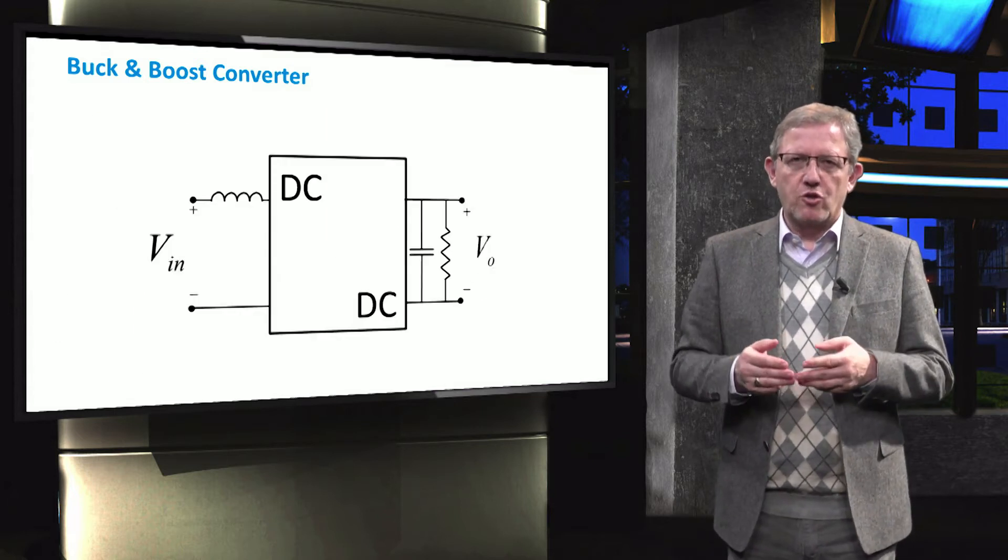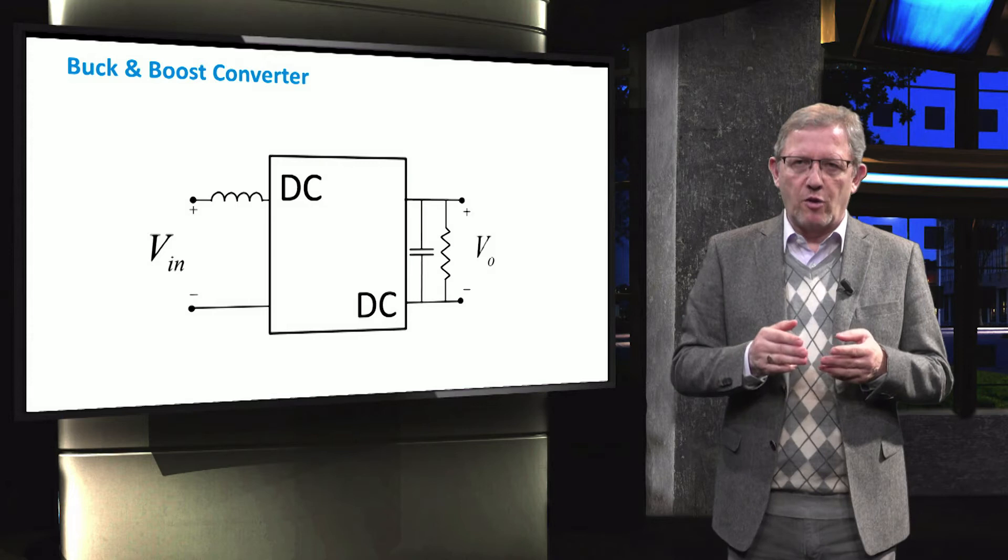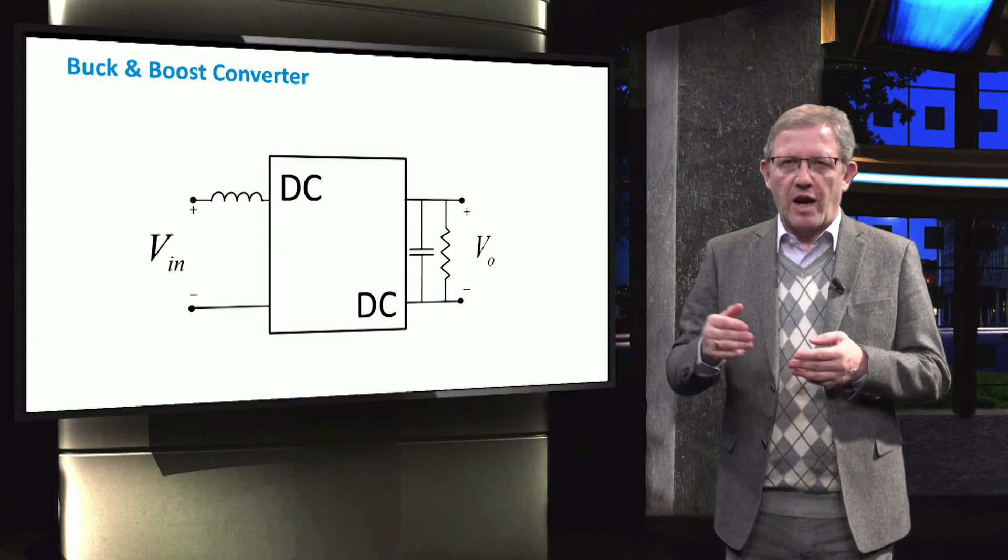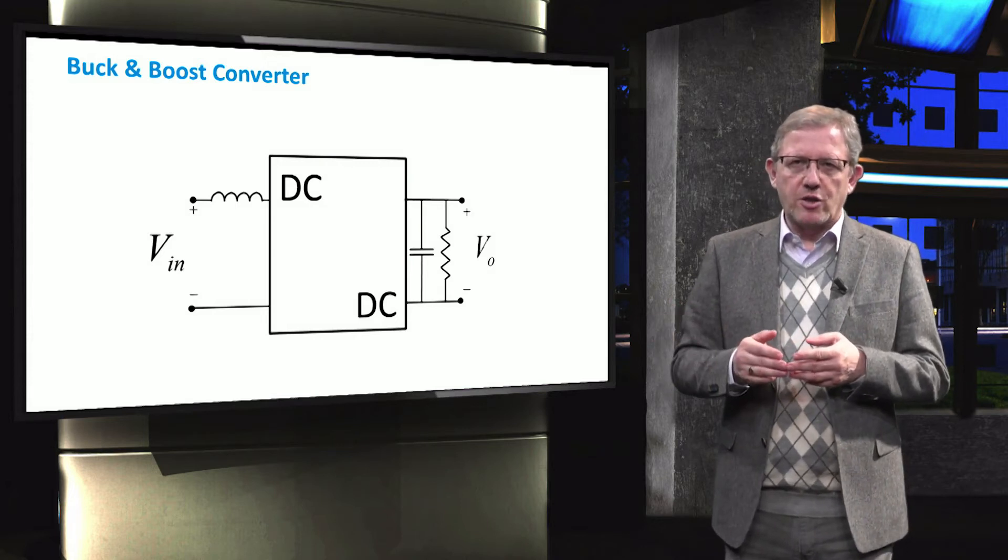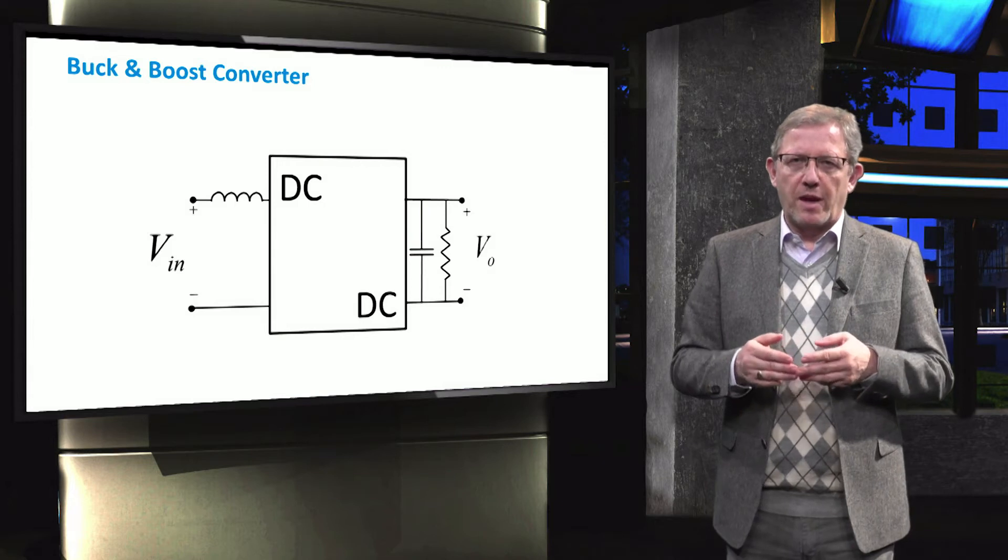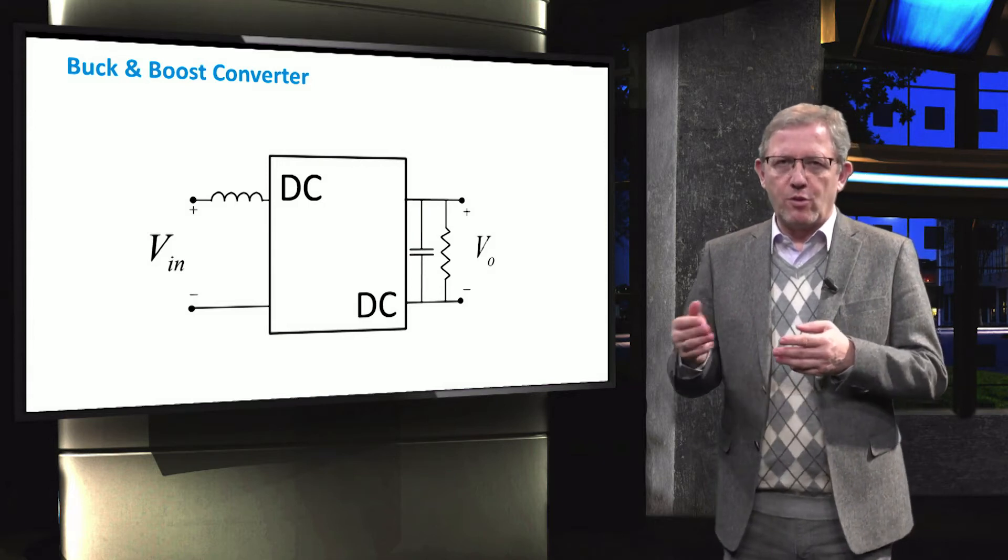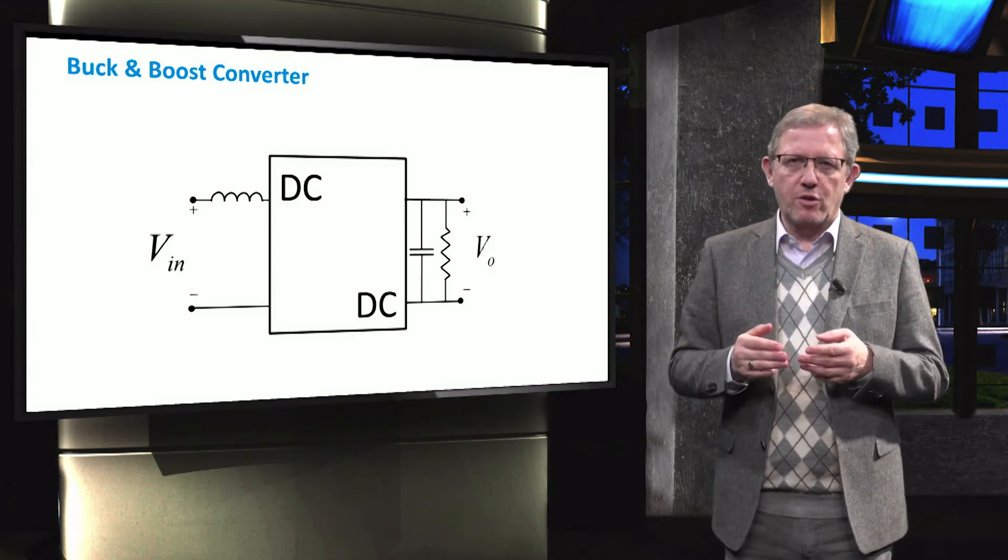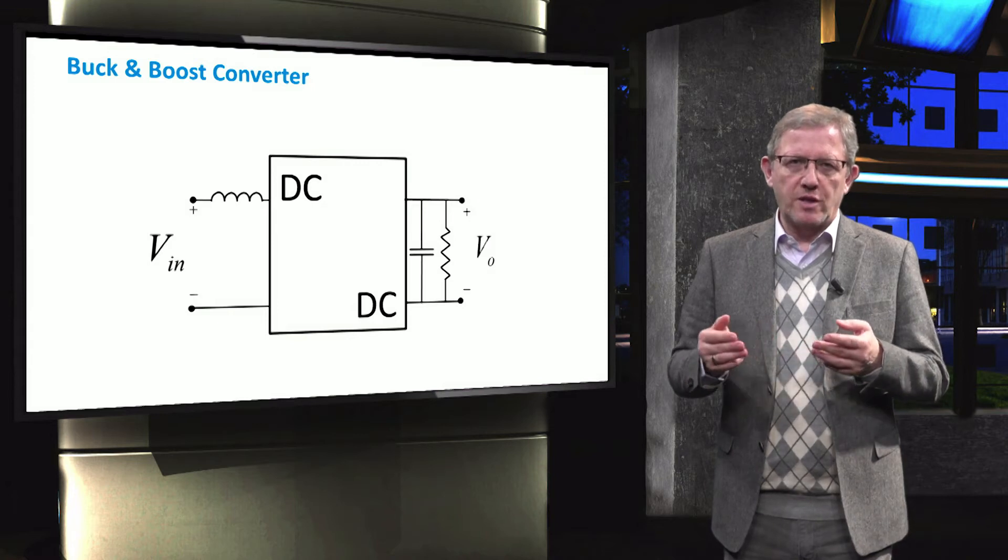This converter should be able to transfer power from lower voltage VIN to higher voltage Voutput and also vice versa. By combining buck and boost, a DC-DC buck and boost converter is made, as it is shown in the figure.